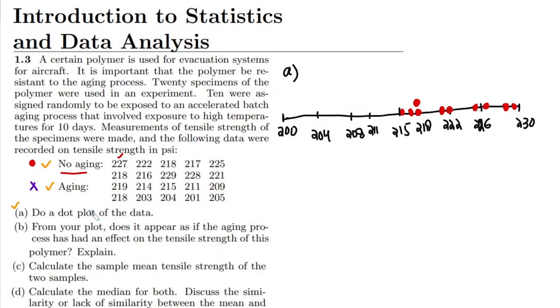For it I have selected this purple color. The first data point is 219, and 219 is somewhere here. The other one is 214, it is here. 215, it is here. 211 here, 211 here, 209 here, 218 it is here, 203 so 203 is here, 204 here, 201 here, and the last one is 204.